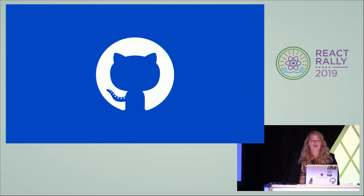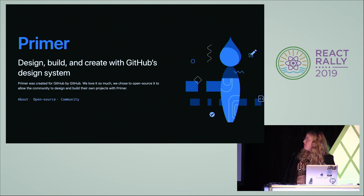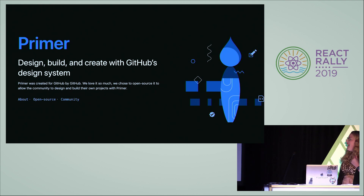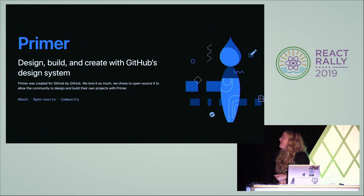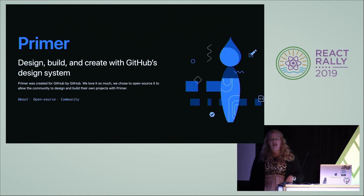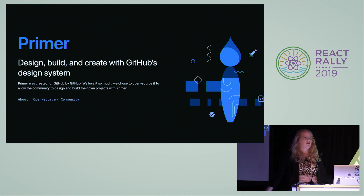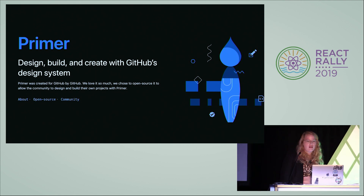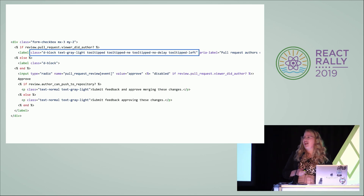A little bit about the history of design systems at GitHub. Our design system is called Primer. It's seven years old — its birthday was in July, happy birthday. It started as sort of a pet project for a group of people at GitHub who saw the impending CSS doom we were moving towards. It started as mostly just a style guide and CSS components. That meant every time we built a new feature, we didn't have to rewrite a bunch of custom CSS — it helped keep bundle sizes down and was great for performance. But like every new shiny tool, it ended up not being so great after a long period of time.